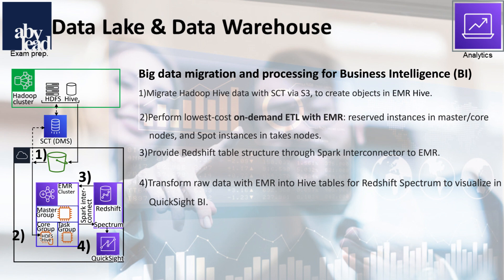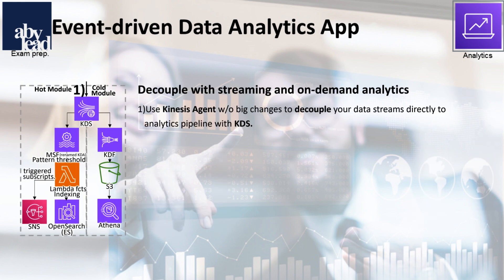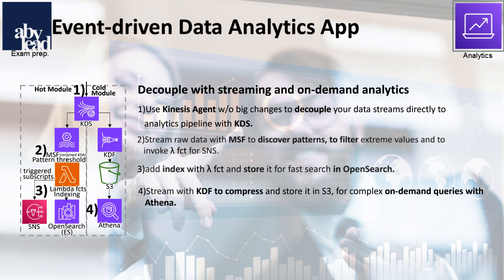For faster business decisions, the following use cases use stream processing apps in real-time. With Kinesis you can ingest media files, logs, click streams, or IoT telemetry. If you need real-time monitoring and at the same time on-demand analytics, you use a hot and cold module architecture. With KDS you stream the end-user transactions and with MSF you monitor for deviating values. You then fan out with SNS in the hot module triggered by one Lambda function, and with a second function prepare for OpenSearch. In contrast, KDF in your cold module partitions and compresses the raw data for long-term storage in S3. Anytime you want, you can interact with Athena Analytics in S3.